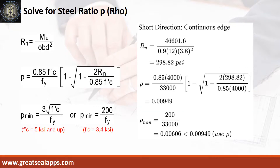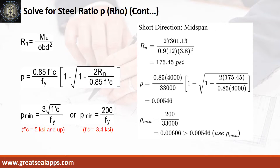Short direction, continuous edge: moment equals 46,601.6 inch-pounds, resistance factor equals 0.9, b equals 12 inches, d equals 3.8 inches. Beam design ratio RN equals 298.82 PSI, reinforcement ratio ROE equals 0.00949. Mid-span: moment equals 27,361.13 inch-pounds, resistance factor 0.9, b equals 12 inches, d equals 3.8 inches. RN equals 175.45 PSI, ROE equals 0.00546.